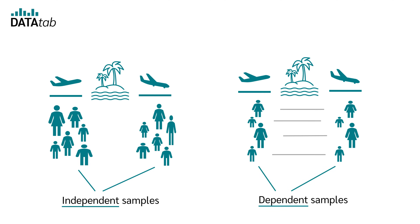You always have a dependent sample if you interview one and the same person at two points in time — for example, once before a certain event and once after a certain event has happened.